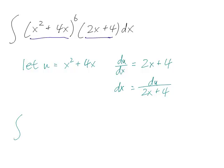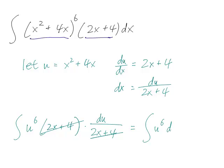So now integral becomes integral of u to the 6, 2x plus 4. Remember you don't want to actually write anything that isn't clearly u because you want to see whether or not they cancel out. And in most cases they do. So this is integral of u to the 6 du.